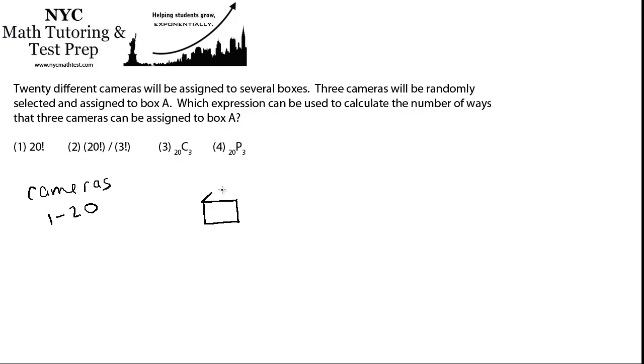So here's our box, this is box A, and we're going to put three in there. The question is, which three? How many different ways could we choose three of these to go in there?